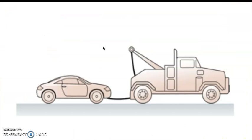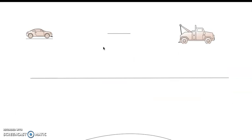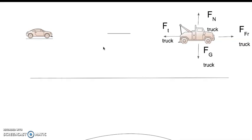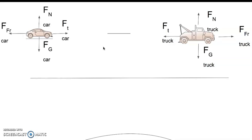Okay, one last example. Here we have a truck towing a cable which tows a car along the surface. The forces on the truck are: force of gravity down, force of normal up, force of friction allowing the truck to move forward without slipping, and force of tension from the cable. The forces on the car are: force of gravity downward, force of normal upward, force of friction opposing the sliding motion, and force of tension from the cable pulling the car.